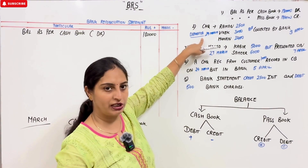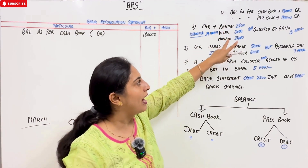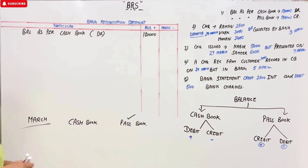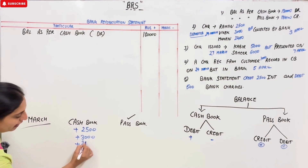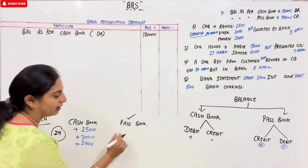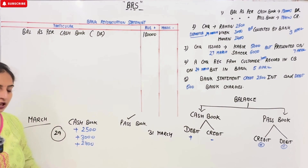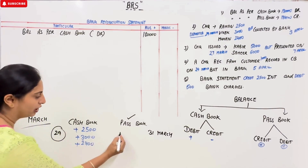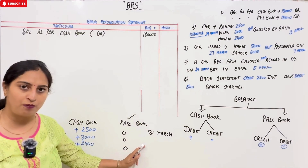First, checks deposited into the bank — Raman, Vivek, and Mohan. We recorded these as plus in our cash book on 29th March. But they were collected by the bank on 3rd April — after 31st March. So by 31st March, these transactions show zero in the pass book. To make the balance equal to zero here, we put them in the minus column: $2,500, $3,000, $2,400.